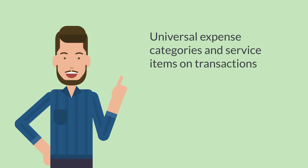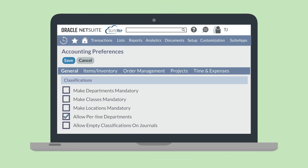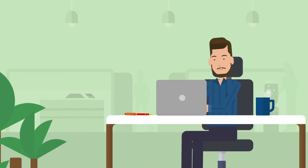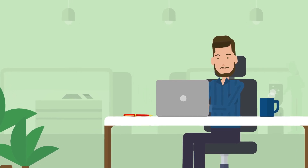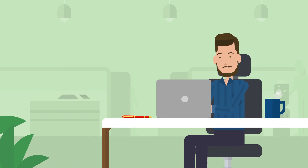Also, if you plan to use classifications in journal entries, you should make sure your classifications are global. Otherwise, make sure you've enabled the Allow Empty Classifications on Journals preference on the General sub-tab of Accounting Preferences. With the NetSuite Intercompany Time and Expense feature, NetSuite does a lot of the heavy lifting of intercompany transactions for you, ensuring that your finances accurately display what's happening in each of your subsidiaries.